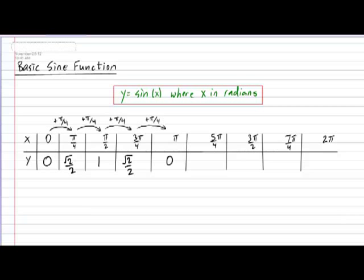For the angle 5 pi over 4, you will find that that corresponds to the y-coordinate of negative root 2 over 2. For the angle 3 pi over 2, you will find that the y-value corresponds to negative 1. For the angle 7 pi over 4, you will find that the y-value corresponds to negative root 2 over 2.